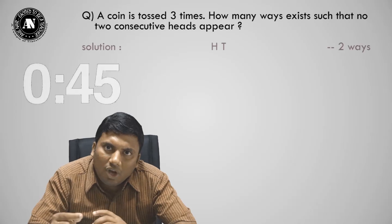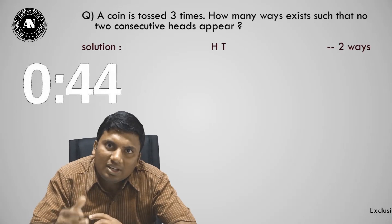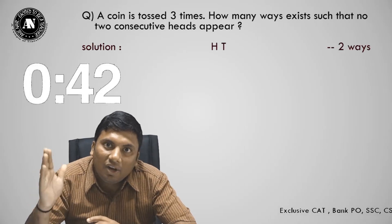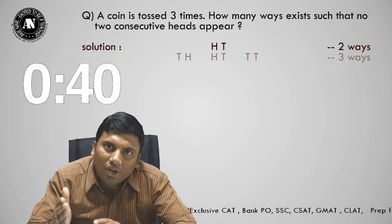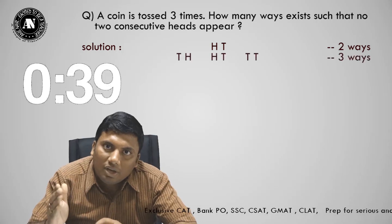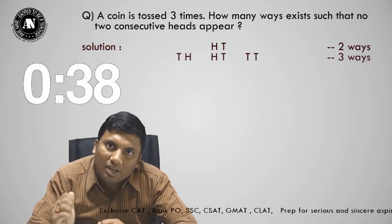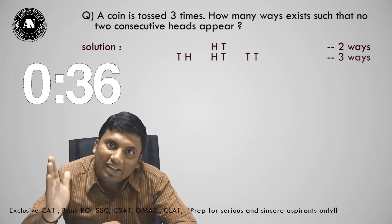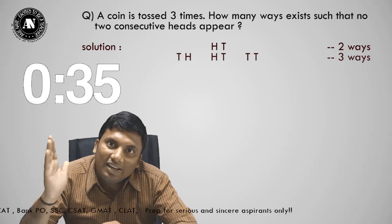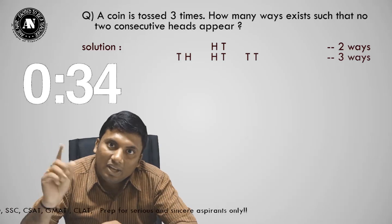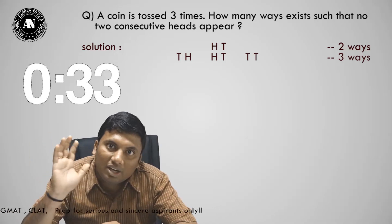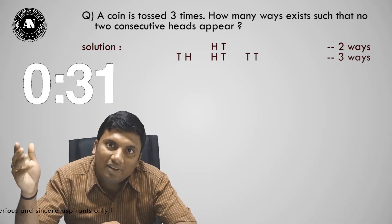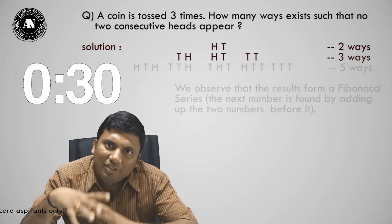Now listen to my approach. If I toss a coin once, I will get head or tail — two ways. If I toss a coin two times, I get: head-head, head-tail, tail-head, tail-tail. Head-head should not come consecutively, so delete it. How many ways? Three.